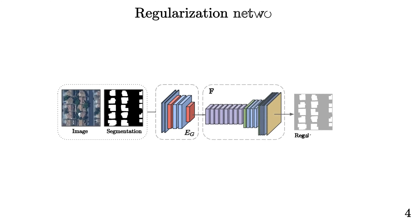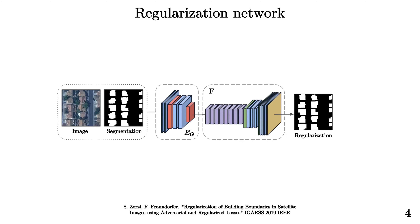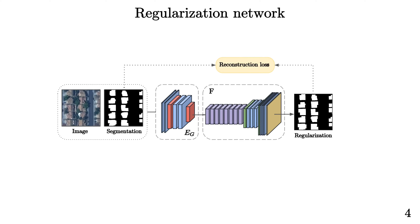As a regularization method, we used a modified version of the approach proposed by Zorzi and Frondofa in 2019. The regularization network is a residual autoencoder that receives the intensity image and the segmentation as input and generates the refined mask. To force the network to generate building footprints having a shape and pose similar to the segmentation prediction, we compute the binary cross-entropy between the regularized and the segmented mask.